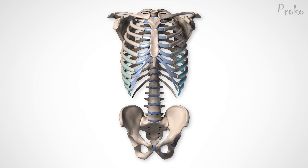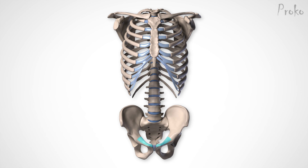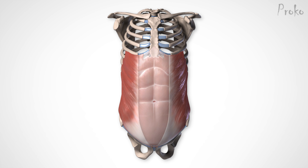It originates off the bottom eight ribs and inserts onto the anterior two-thirds of the iliac crest, xiphoid, the linea alba, and pubis. The muscle fibers don't reach all the way to the linea alba — they attach to their tendon, called the abdominal aponeurosis, at the edge of the linea semilunaris. This large aponeurosis covers the entire rectus abdominis muscle.